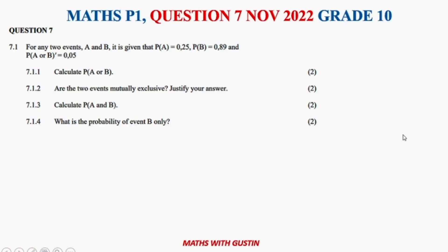Welcome everybody to yet another one — the last question on the Maths Paper 1, November 2020. It's a probability question divided into two parts: 7.1 and 7.2.